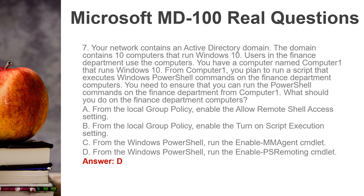Question 7. Your network contains an Active Directory domain. The domain contains 10 computers that run Windows 10. Users in the finance department use the computers. You have a computer named Computer 1 that runs Windows 10. From Computer 1, you plan to run a script that executes Windows PowerShell commands on the finance department computers. You need to ensure that you can run the PowerShell commands on the finance department computers from Computer 1. What should you do on the finance department computers? A. From the Local Group Policy, enable the Allow Remote Shell Access setting. B. From the Local Group Policy, enable the Turn on Script Execution setting. C. From Windows PowerShell, run the Enable-MMAgent cmdlet. D. From Windows PowerShell, run the Enable-PSRemoting cmdlet. Answer: D.